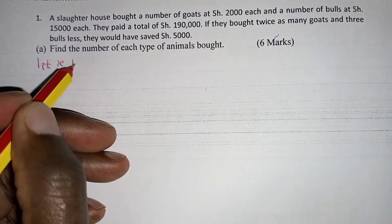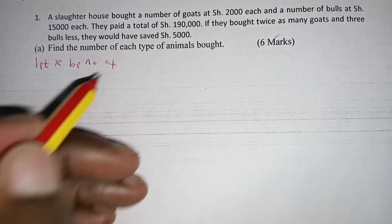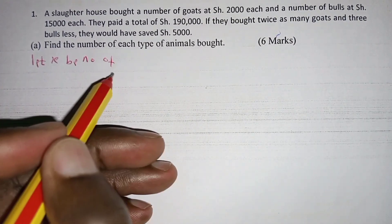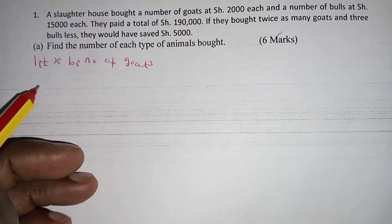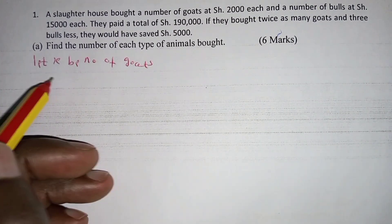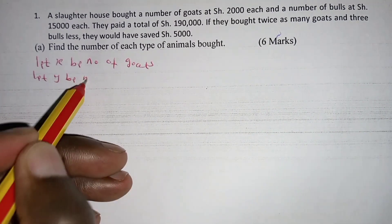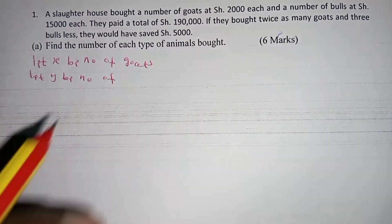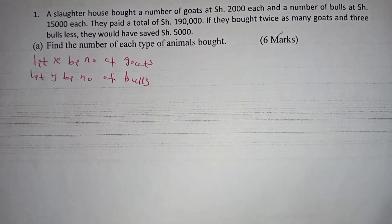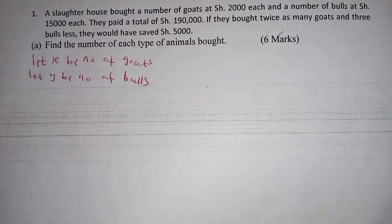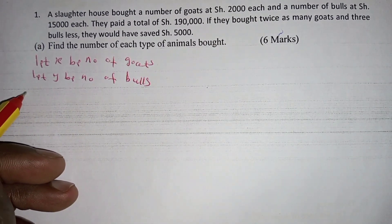The first step is to define our variables. Let x be the number of goats, and let y be the number of bulls.